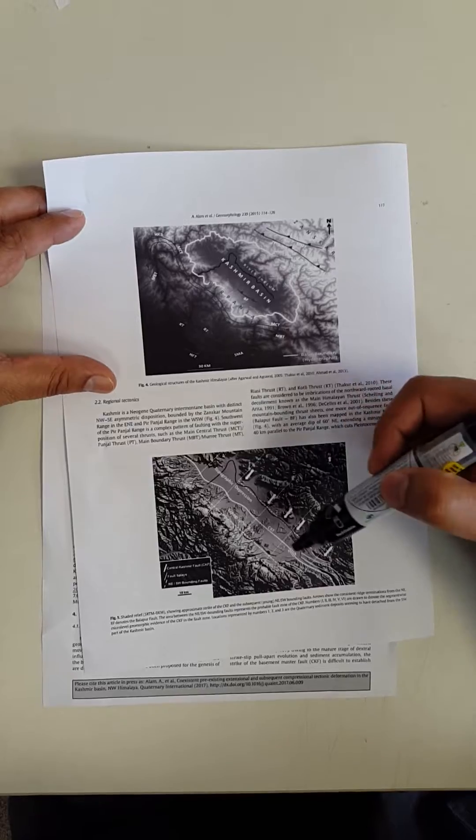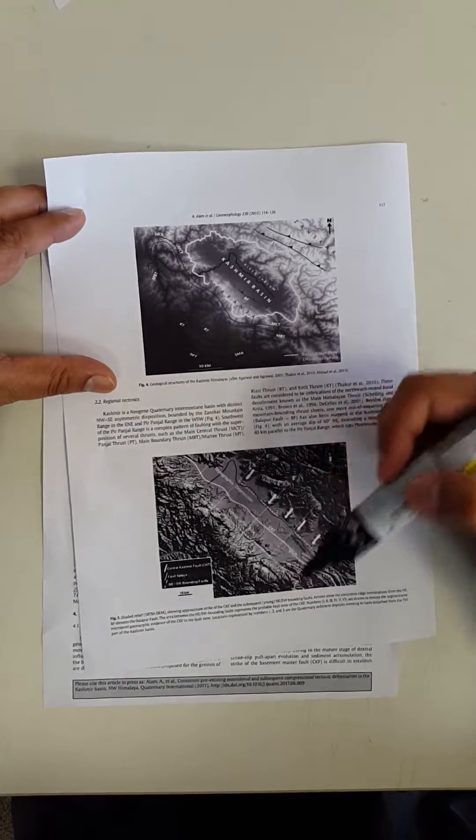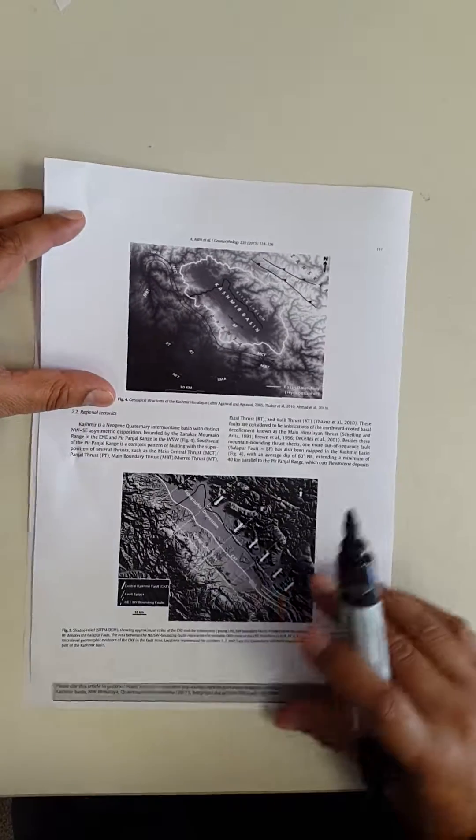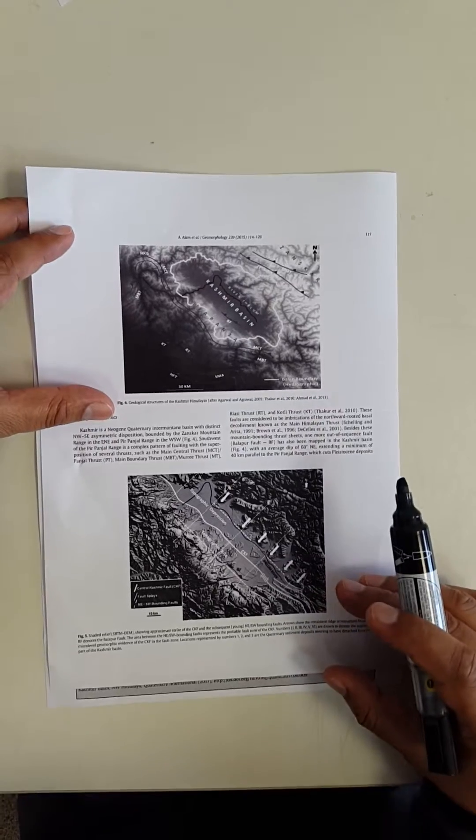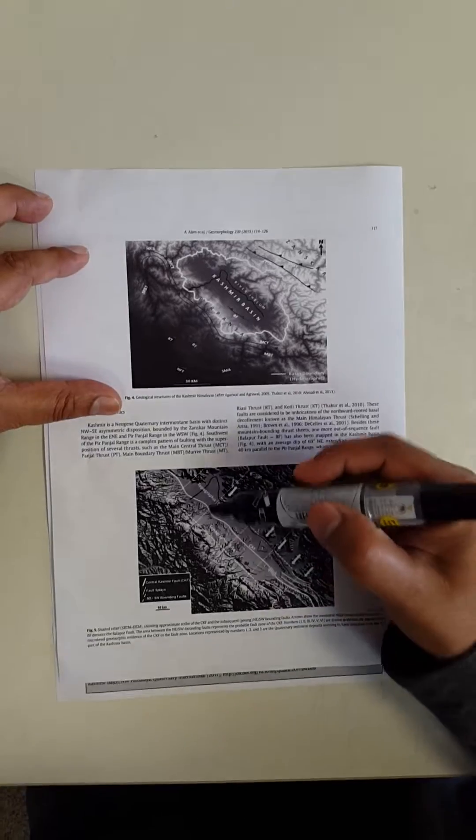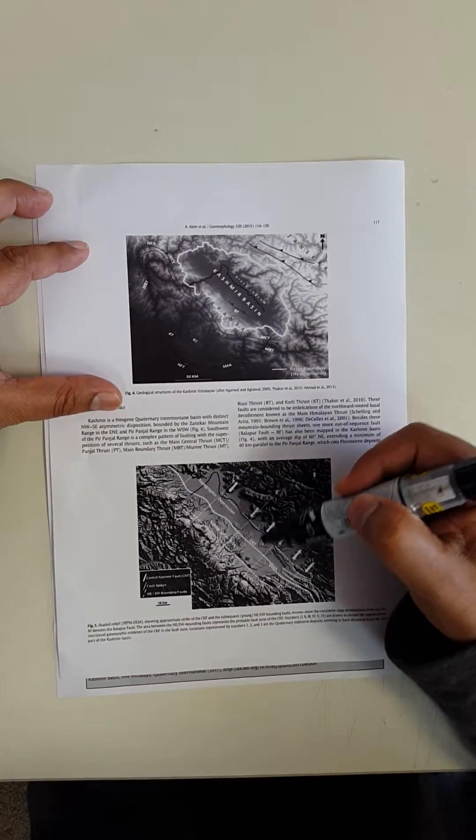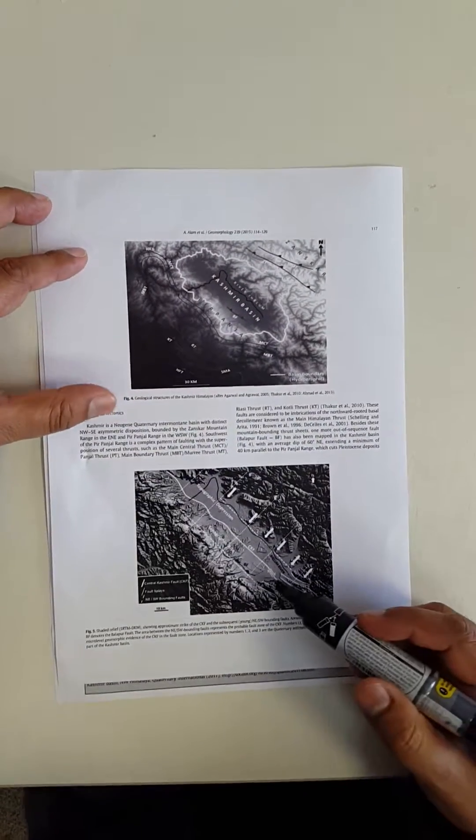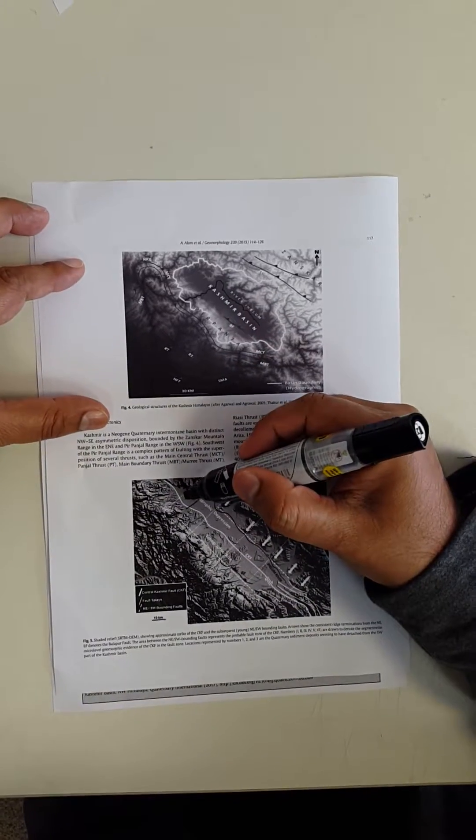Based on that, they are saying this basin is actually formed by the fault. Now I have a major problem with this, which I have discussed in many papers. For example, if this is the fault and forms the basin, then this fault should not actually pass through the basin. It should be at the margins.